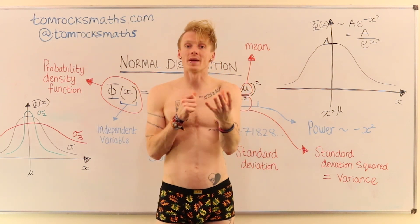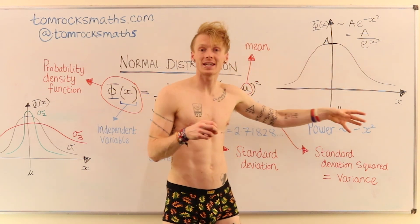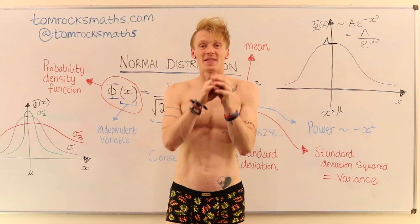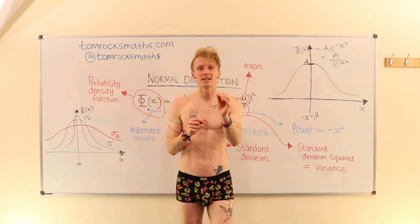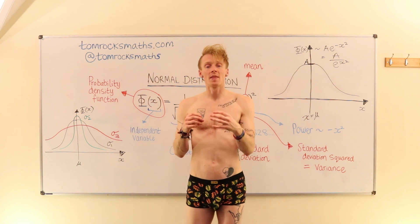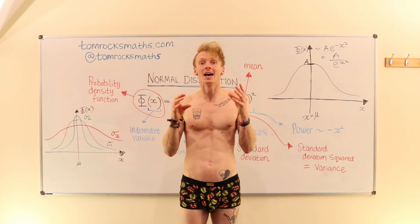So you assume that your data are normally distributed and then you can read off the particular value, the particular probability that this was just a complete chance event. So if your probability is below 0.05, then you can say that your results are significant at the 95% level.